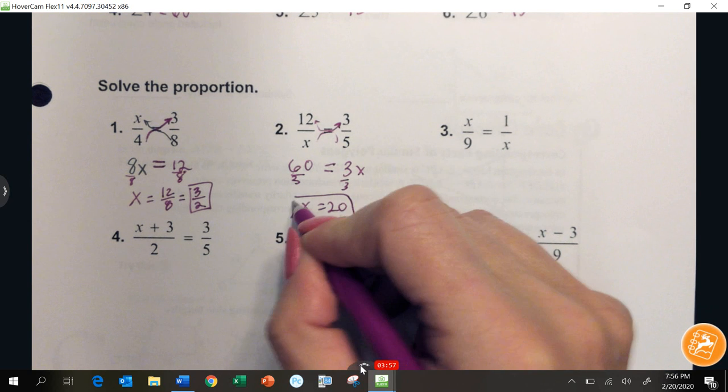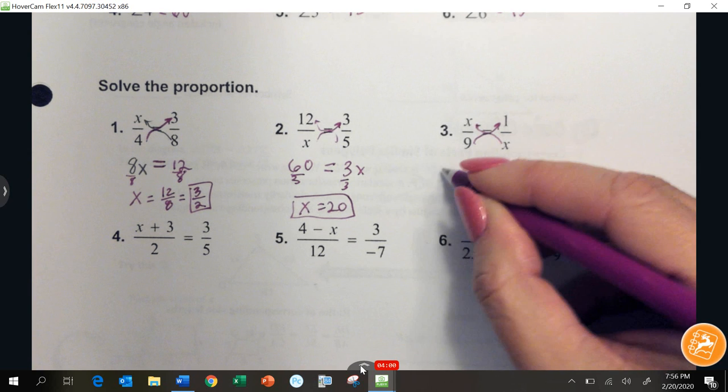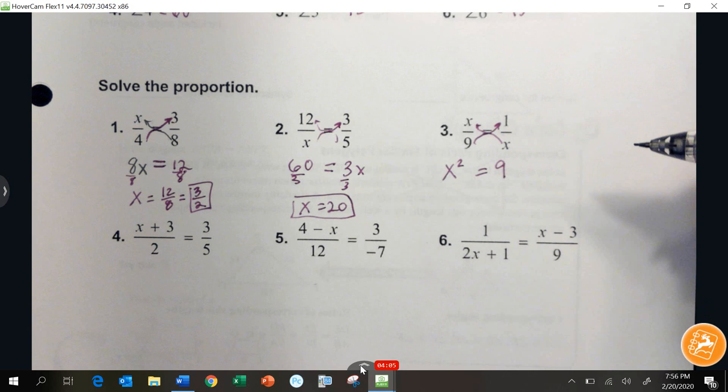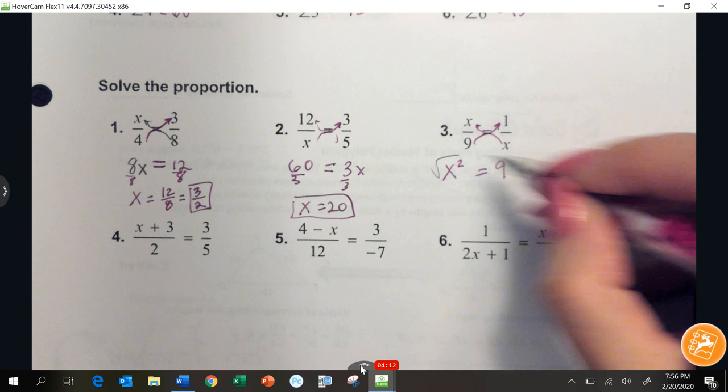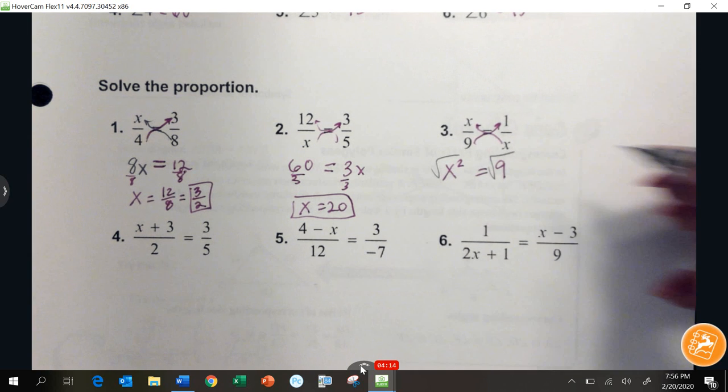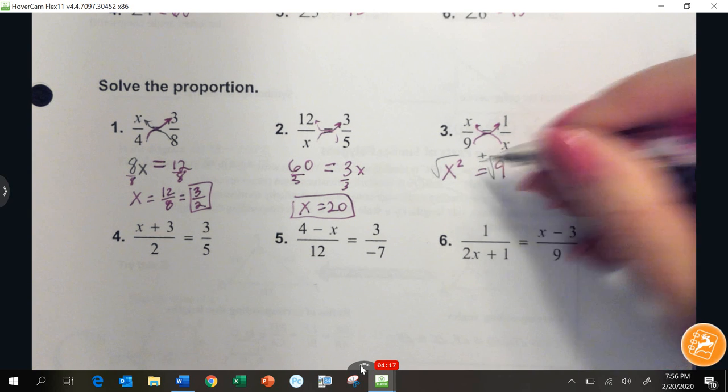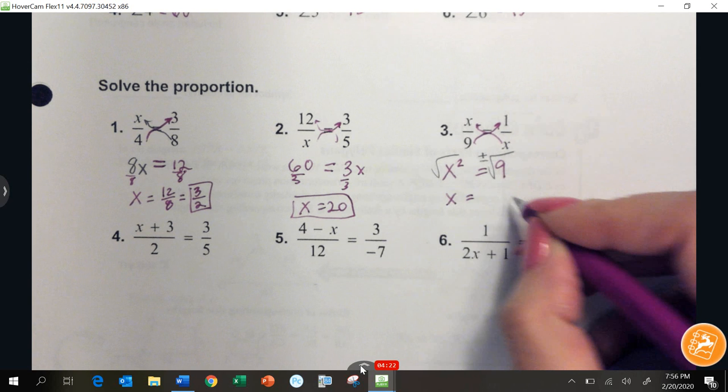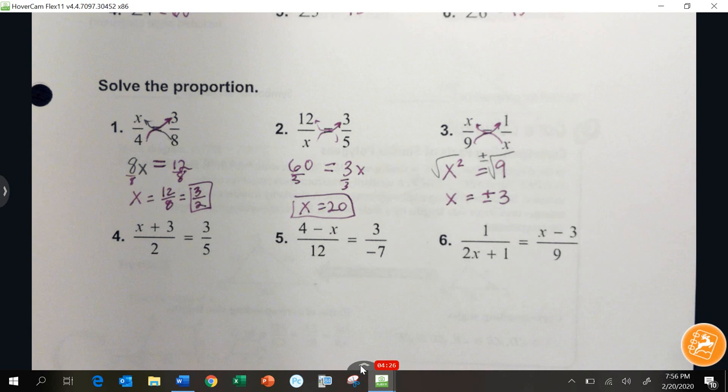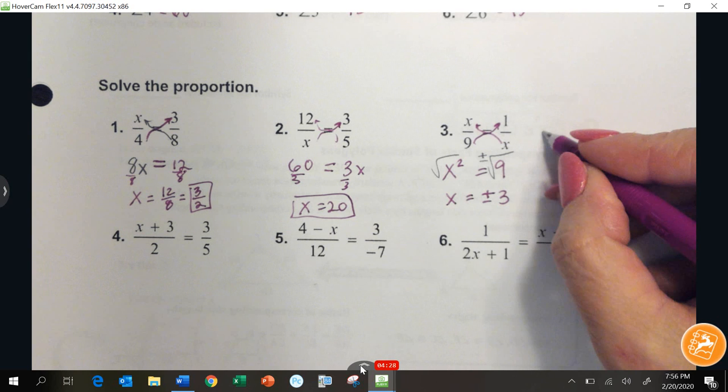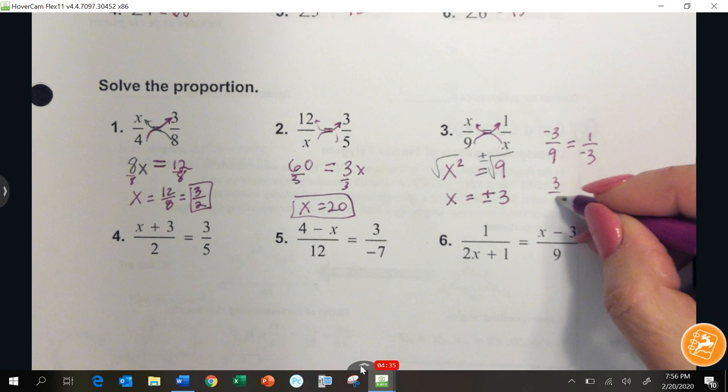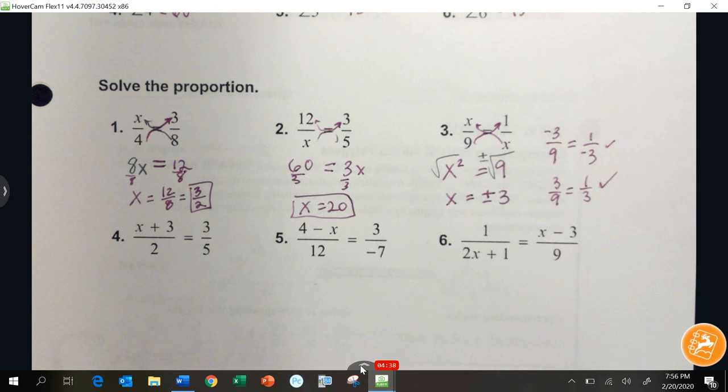Number 3. Cross multiply up, I'm going to get x squared equals 9. This was covered at the beginning of the year. Anytime you square root both sides of an equation, you can't just square root. You have to put a plus minus. You have to put a plus minus in, because x squared has two answers. This could equal positive 3, or it could equal negative 3. If I plugged in positive 3 or negative 3, these two ratios would equal each other. Positive 3 or negative 3. Both answers work.